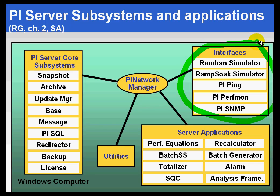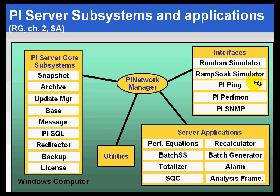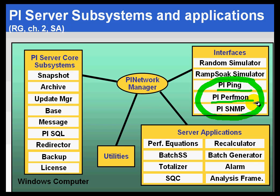The interfaces are the components that gather data, and typically they get data from live sources. We do have a couple of exceptions: the Random and Rampsoak interfaces are random number generators used for training purposes. We also have PI Ping, PerfMon, and PI SNMP interfaces. These do not retrieve data externally so much as measure things internal to the computer or local things. For example, the PI Ping interface measures the ping rate between wherever it is installed and external computers, making it a good measure of latency within your system. PI PerfMon can be used for monitoring Windows performance counters.